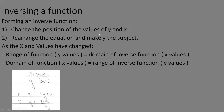To form an inverse function, you change the positions of x and y, rearrange the equation, and make y the subject. For example, y equals 3x plus 5: swap x and y to get x equals 3y plus 5, then rearrange to get y equals (x minus 5) divided by 3. That is your inverse function.